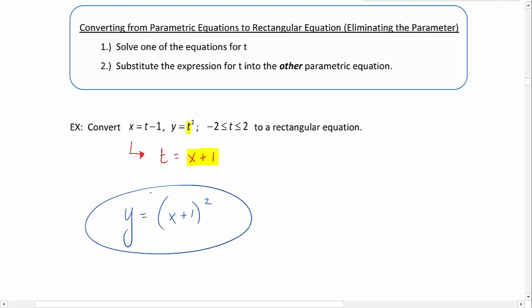Now I do want to point out that our domain is affected as we make the conversion. The domain can't possibly be t in between negative 2 and 2 when we are in rectangular form because there's no t.